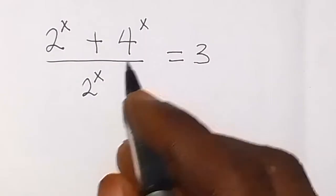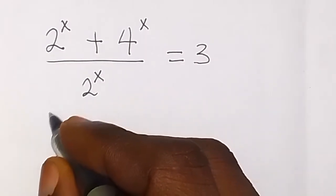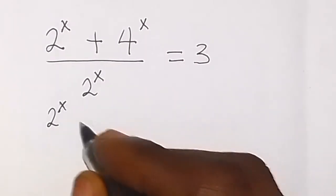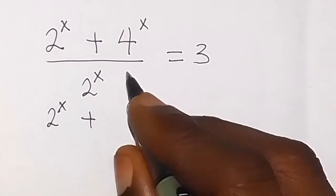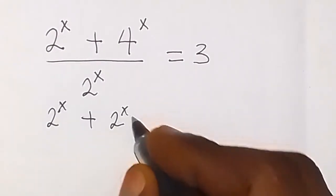Let's rewrite this 4 raised to the power x. Then we are going to have 2 raised to the power x plus. Here we can write this one as also 2 raised to the power x.